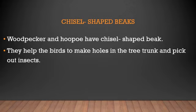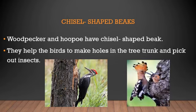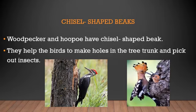Next is the chisel-shaped beak. Woodpeckers and hoopoes have chisel-shaped beaks. These beaks help the birds to make holes in tree trunks and pick out insects. Their beak is longer and very hard — it can cut the wood of the tree. They break open tree trunks and eat the insects living inside.